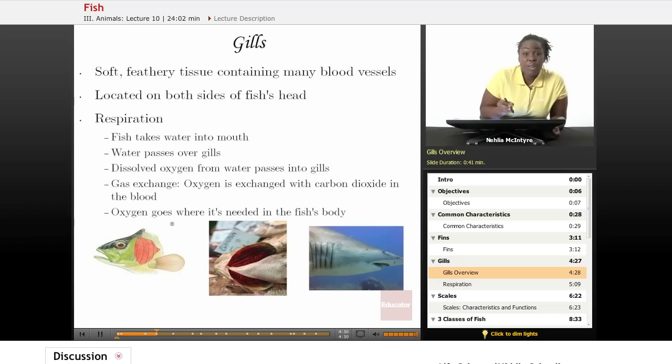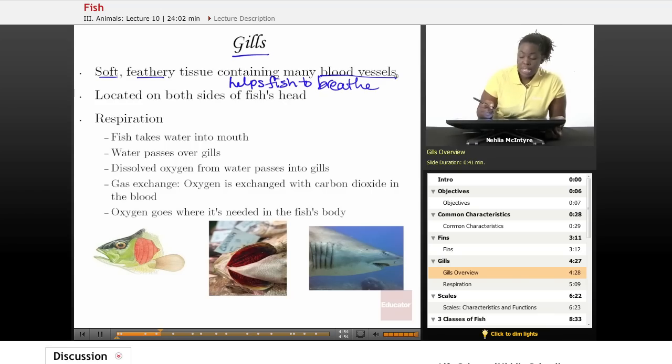The next structure we'll talk about are the gills. The gills are the soft, feathery tissue that helps the fish to breathe. The fish contain several blood vessels, and that's because the oxygen from the water is collected into those blood vessels, go throughout the body of the fish.